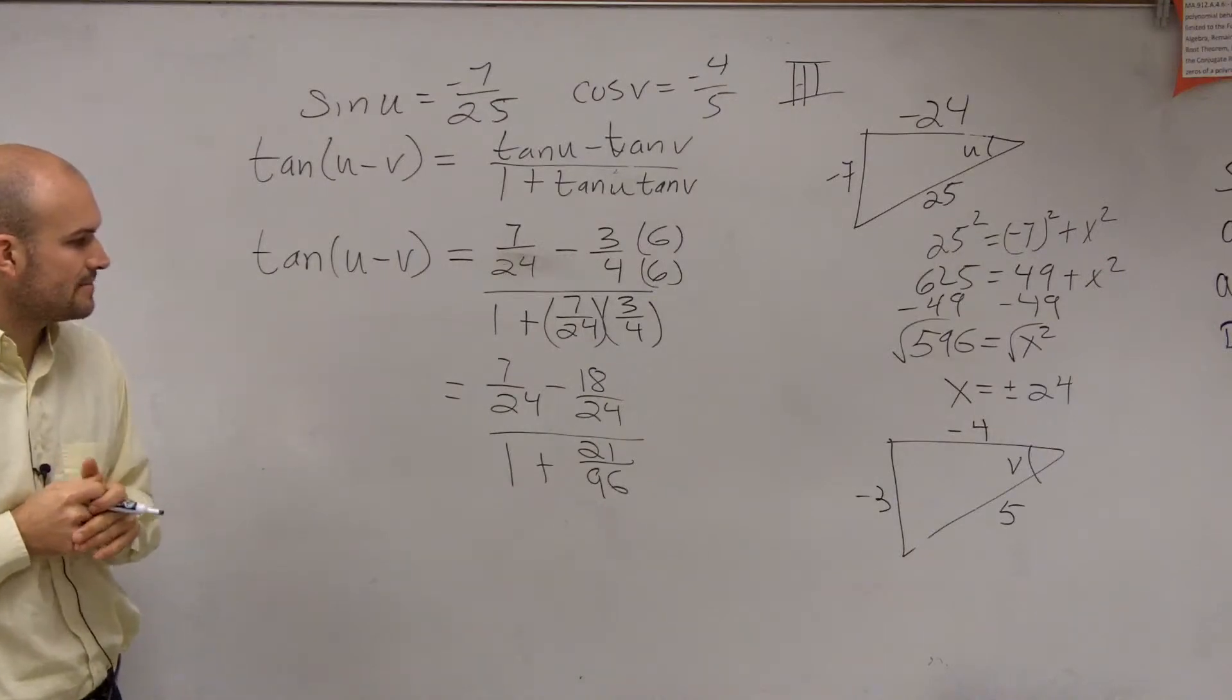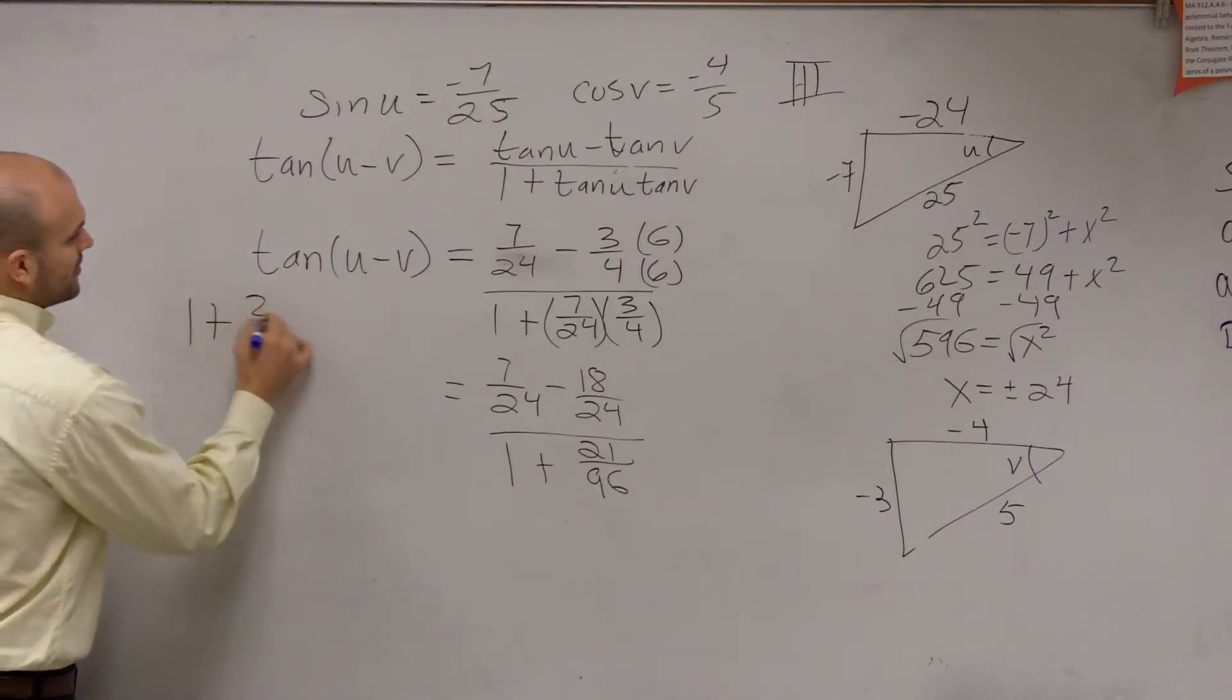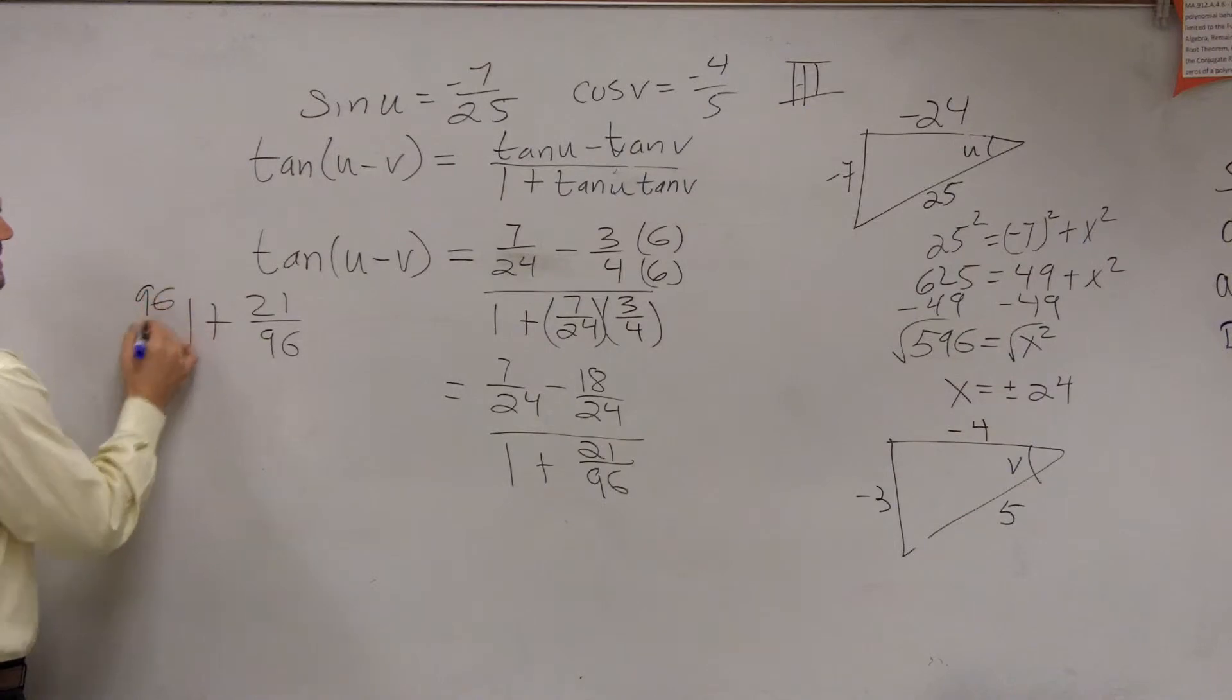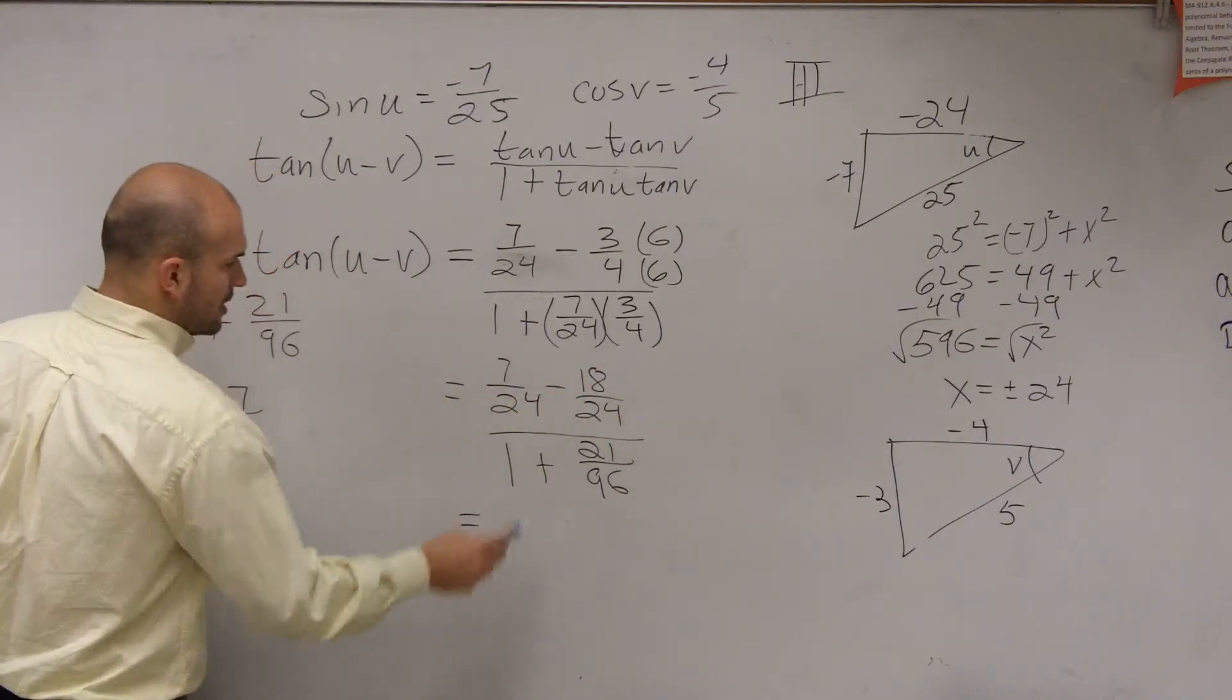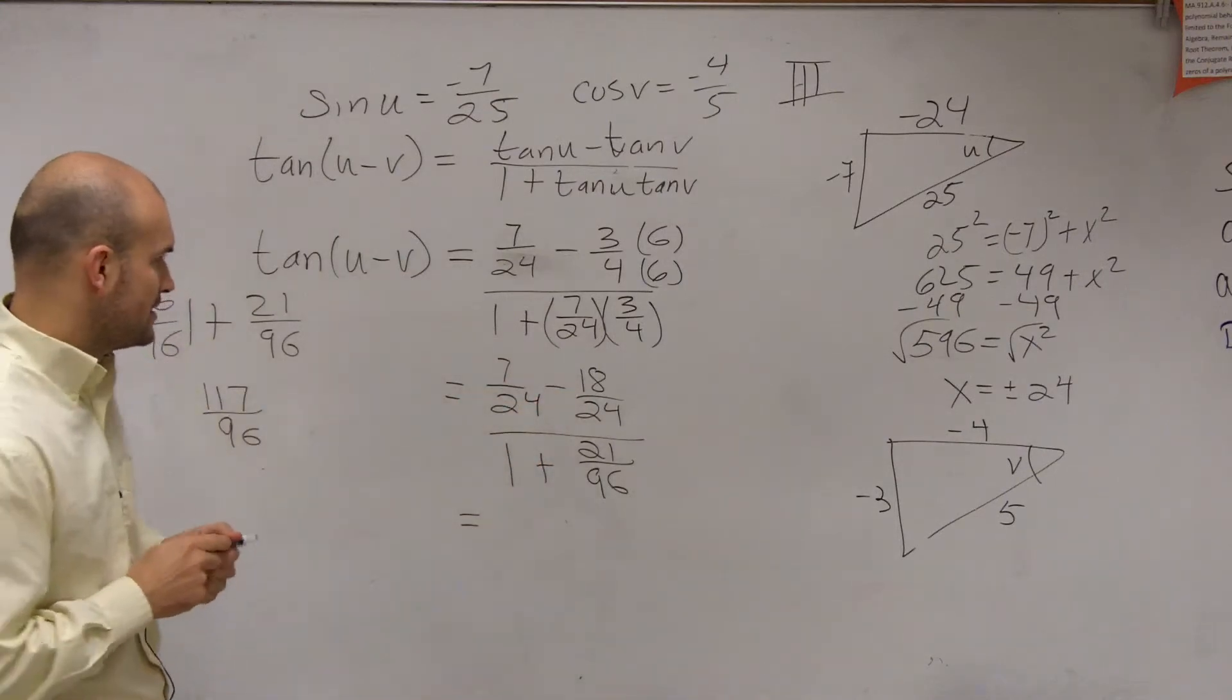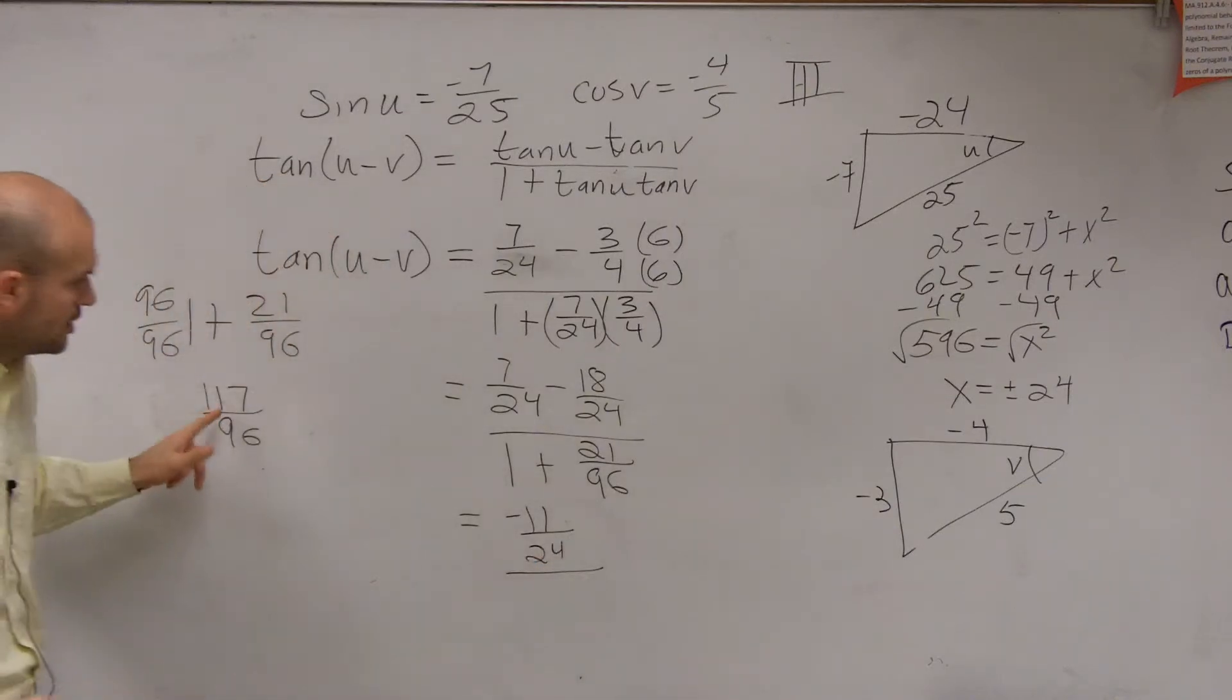To add 1 plus 21 over 96, we'll do this over here, we need to multiply this by 96 over 96. So now we've got to go ahead and add them. So then this is going to be 117 over 96. So therefore, and then we can subtract these, so we're going to get, this has become 7, so that's going to become negative 11 over 24, divided by 117 over 96.